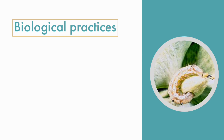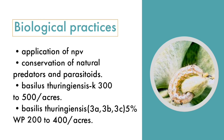Biological Management: Application of nuclear polyhedrosis virus in evening hours at 7 and 12 weeks after sowing. Conservation of natural predators and parasitoids to avoid unnecessary pesticide spraying. Application of Bacillus thuringiensis at the rate of 300 to 500 g per acre, and also at the rate of 200 to 400 g per acre.